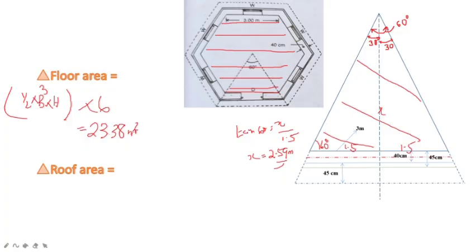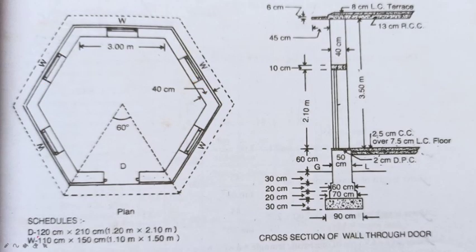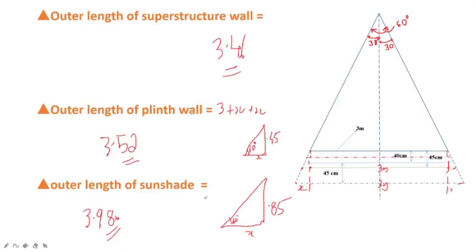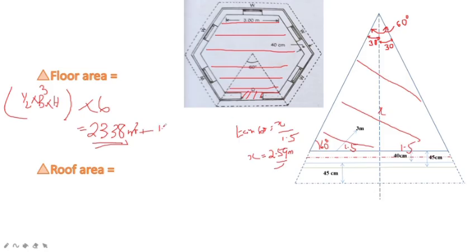We can also include additional floor area. There is an additional height to consider. We can also add the door area: the door length is 1.20 m into the wall thickness of 40 cm, that is 0.40. So we have to add this area. Then we also have to add the roof area.